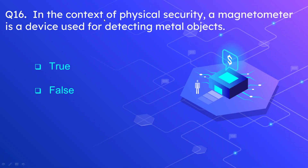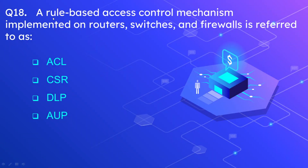In the context of physical security, a magnetometer is a device used for detecting metal objects — true or false? The correct option is true; a magnetometer is a device used for detecting metal objects. Question number 18: A rule-based access control system implemented on routers, switches, and firewalls — the correct option is ACL or access control list.